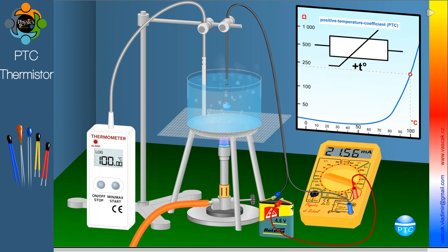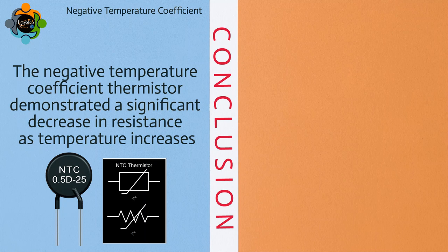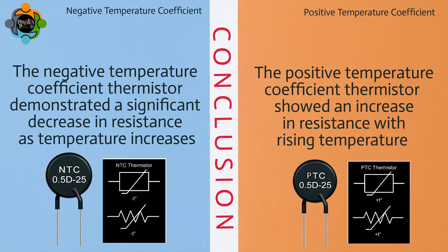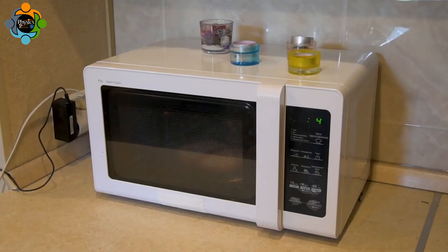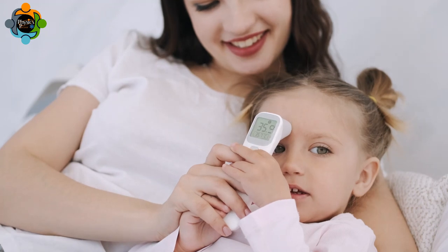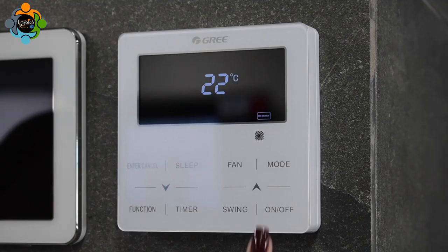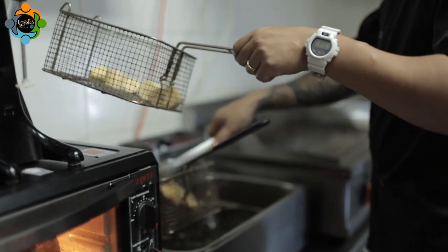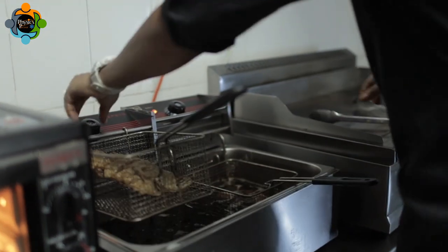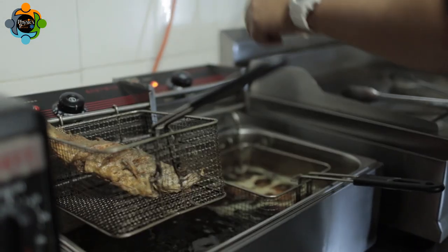As we increase the temperature to 100 degrees Celsius, the resistance increases to approximately 240 ohms and the current decreases to 21.56 milliamperes. To summarize: the NTC thermistor demonstrated a significant decrease in resistance as temperature increases, while the PTC thermistor showed an increase in resistance with rising temperature. Thermistors have a wide range of applications — they are used in temperature sensors, digital thermometers, automotive applications, and home appliances like air conditioners and refrigerators.